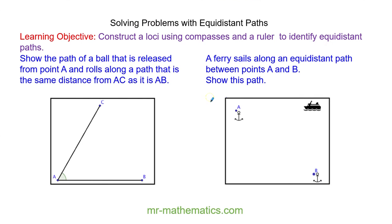Hello and welcome to our lesson on solving problems with equidistant paths. We're going to show the path of a ball that is released from point A and rolls along a path that is the same distance from AC as it is from AB.